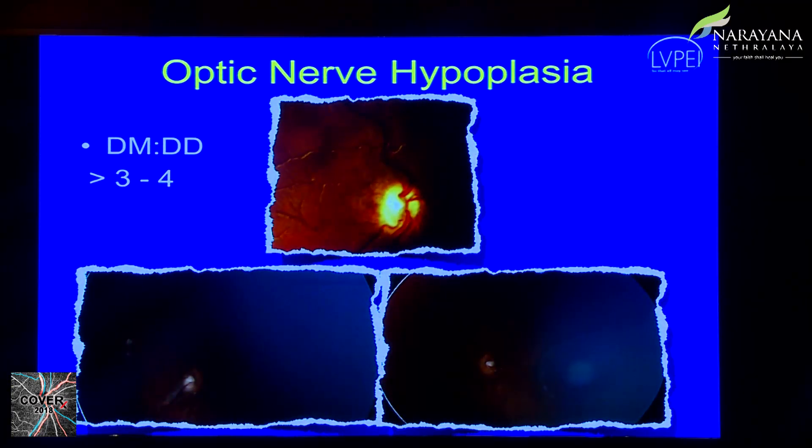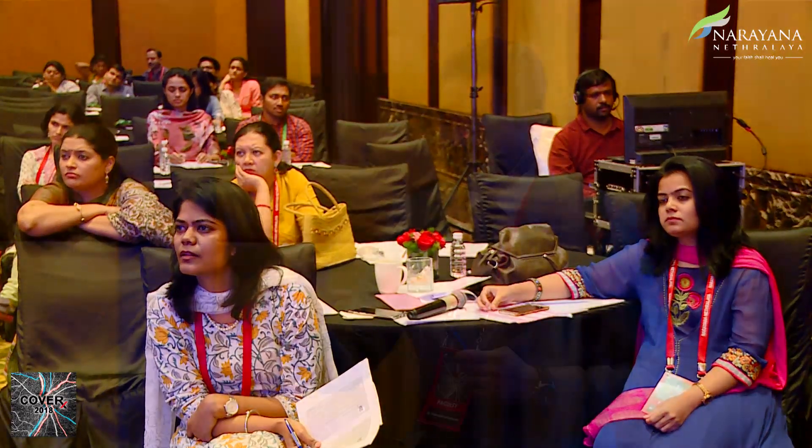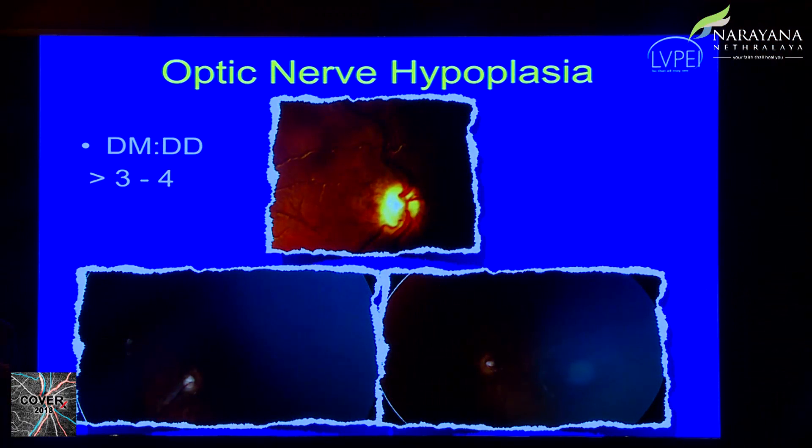In optic disc hypoplasia, the optic canal is normal in size, but there are not enough nerve fibers to fill it, resulting in a small disc. The triad includes: a small disc with a double ring sign from surrounding pigmentation, increased vascularity, and a disc-to-macula diameter ratio greater than 3. You will also see tortuous vessels and RNFL damage.